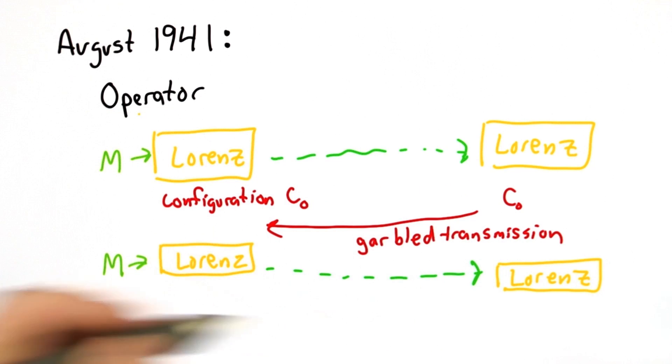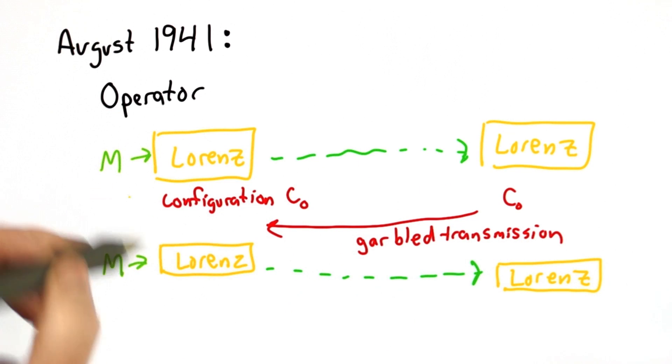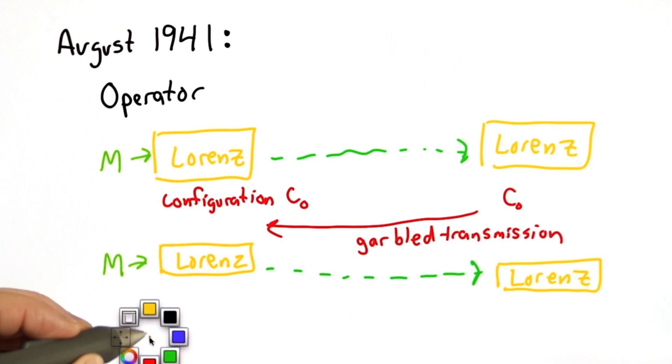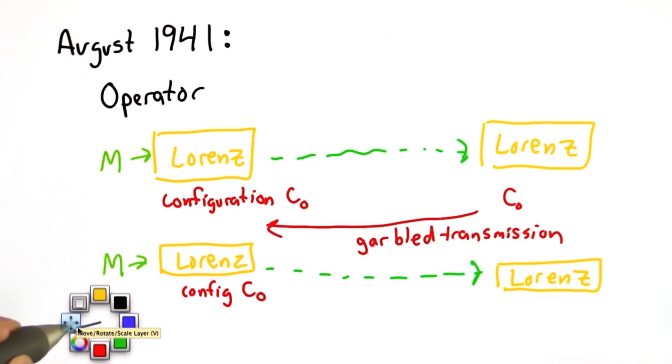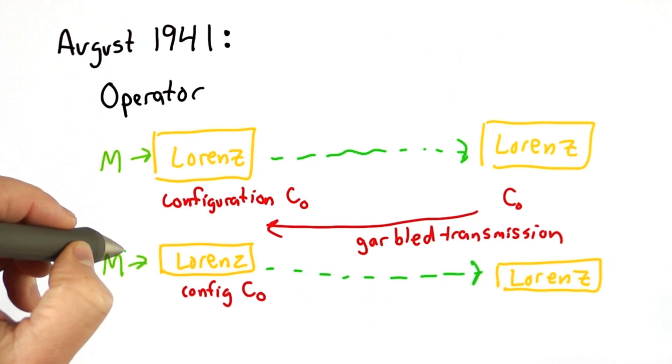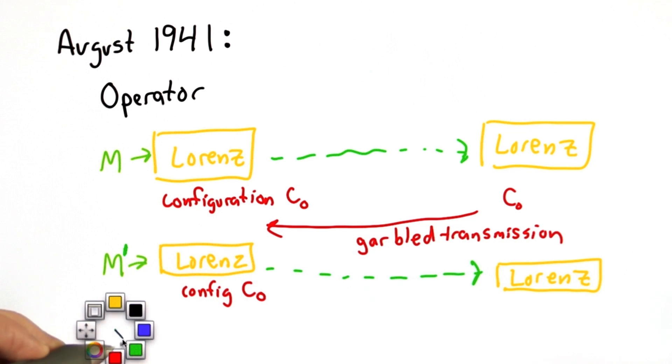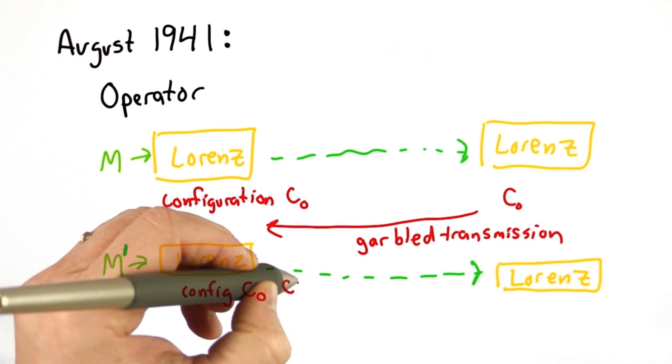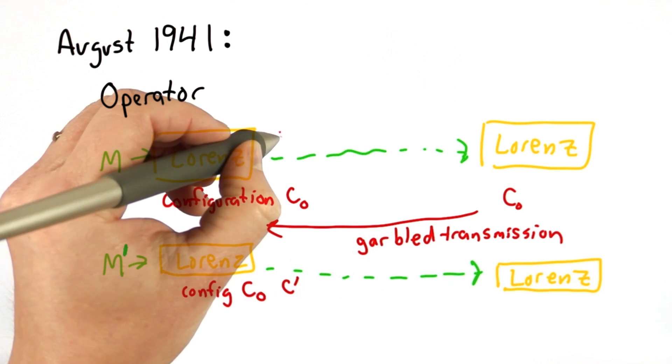If this is exactly what happened, it would have been fine. The messages would be exactly the same since the machine restarted in the same configuration. But what happened was a little different. The operator got lazy the second time and, annoyed at having to retransmit, sent a slightly different message. That meant there was a slightly different ciphertext than the previous time.